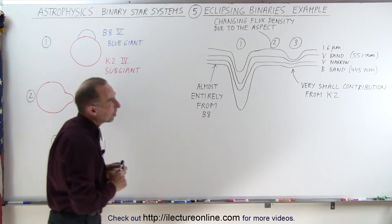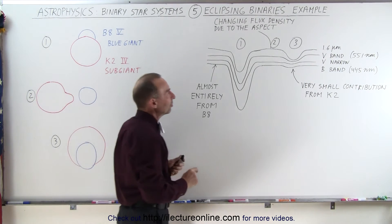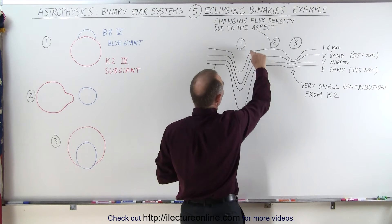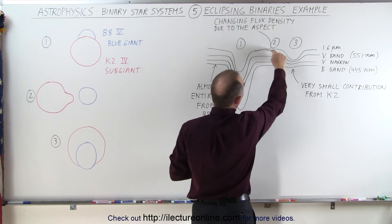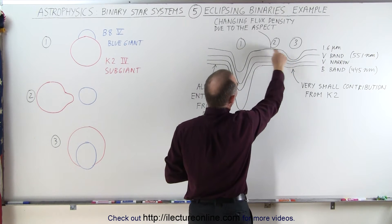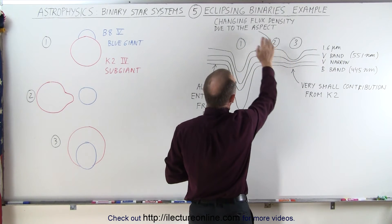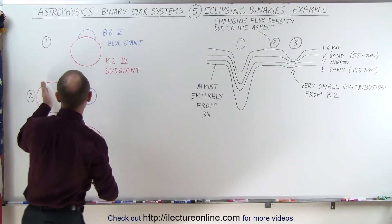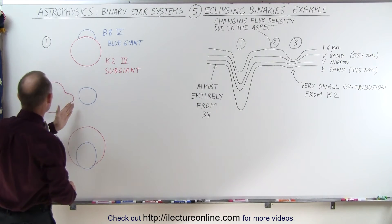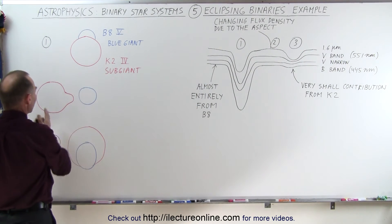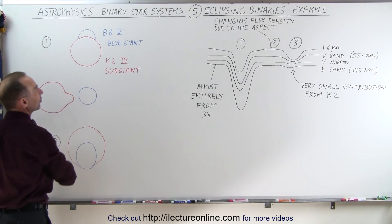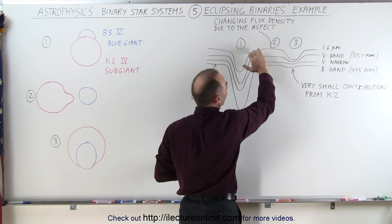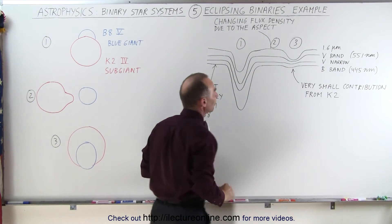When we analyze the light we see something very strange here. Notice on the curve, instead of being flat, it has a slight curve to it. That curve comes from the aspect that as we see more and more of the bulge of the subgiant, we see a larger surface area, and therefore a slightly greater contribution of light coming from that star.